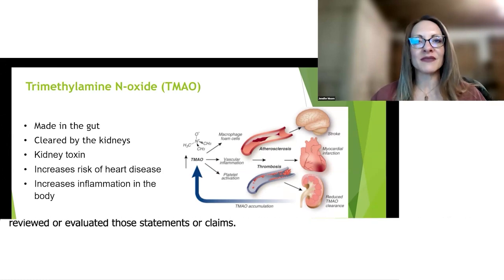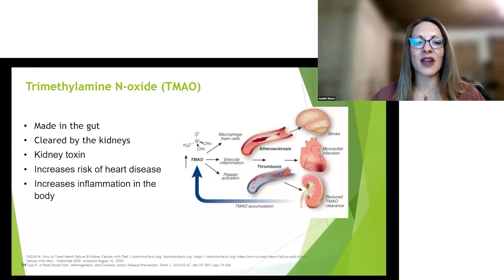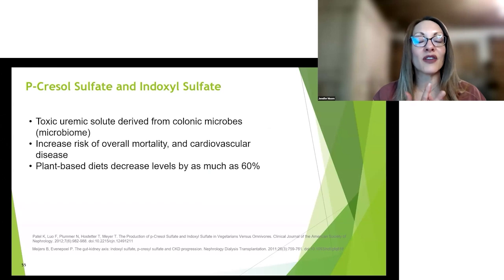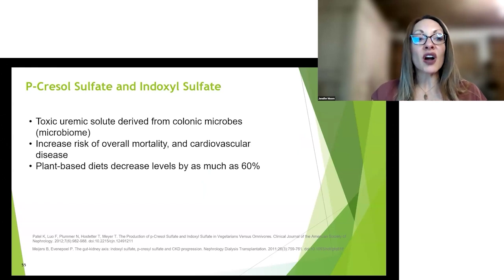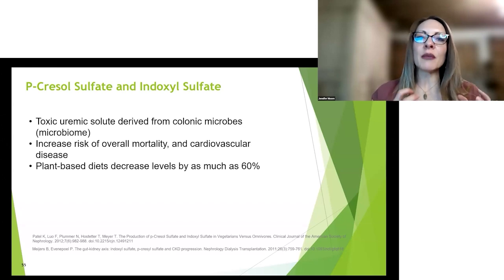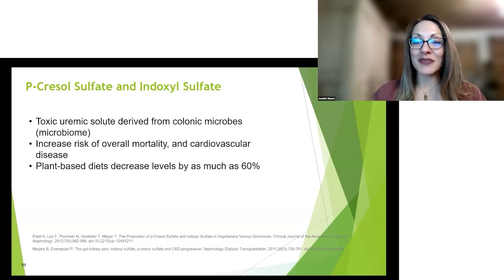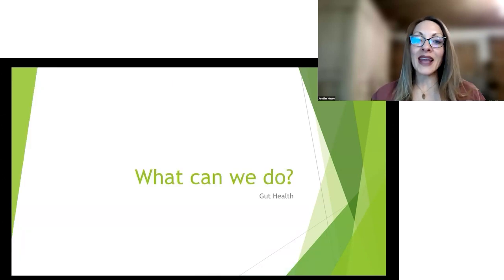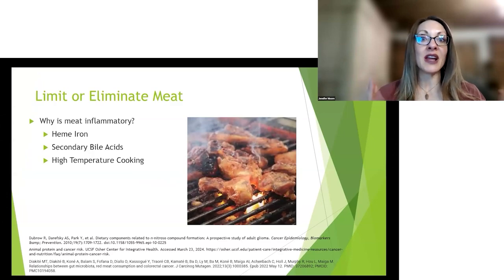TMAO also increases inflammation in the body. We want less inflammation because inflammation causes scarring in the kidneys and increases cardiovascular disease. The other two toxins - p-cresyl sulfate and indoxyl sulfate - are toxic uremic solutes derived from gut microbes. They increase overall mortality and cardiovascular disease. If you eat a plant-based diet, you can decrease these levels by as much as 60 percent. We want to preserve our kidneys, so let's talk about what we can do to improve gut health and lower inflammation.